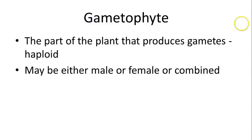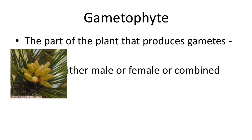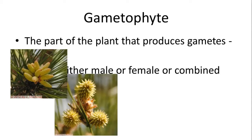The gametophyte is that part of the plant that produces gametes, so the gametes are haploid. The gametophyte could be male, female, or combined. For example, these look like pine cones that are starting to put out pollen — you see these in the beginning of the year because they turn your car yellow during the springtime. They're producing the male gametes, which are the pollen.